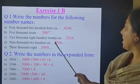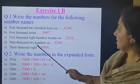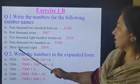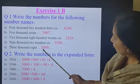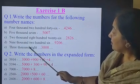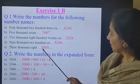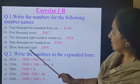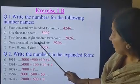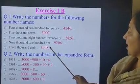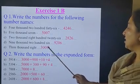Part E: 3,008. In 1000's place we have 3,000; we write 3. In 100's place there is no number; we write 0. In 10's place there is no number; we write 0. In 1's place we have 8; we write 8. The number is 3,008.